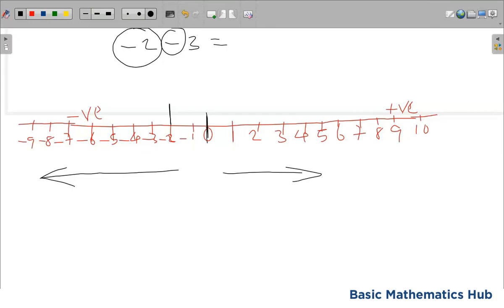Now, having known that we are going to move to the negative side, how many times are we going to move? Three times. Where we stop, that is where our answer is. So we are going to move in this nature. Starting from minus two, we have one, two, three. So we stop at minus five. What that simply means is that minus two minus three is equal to minus five.